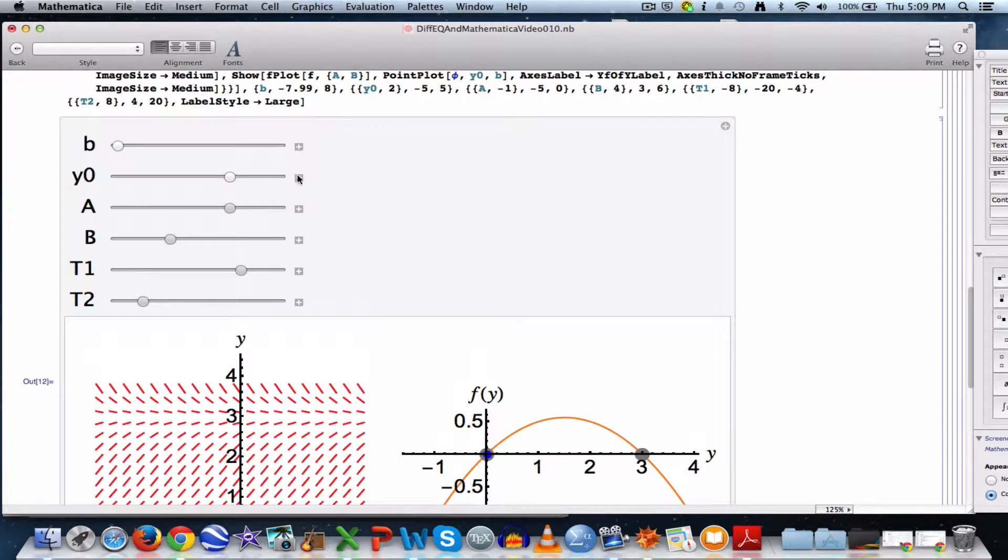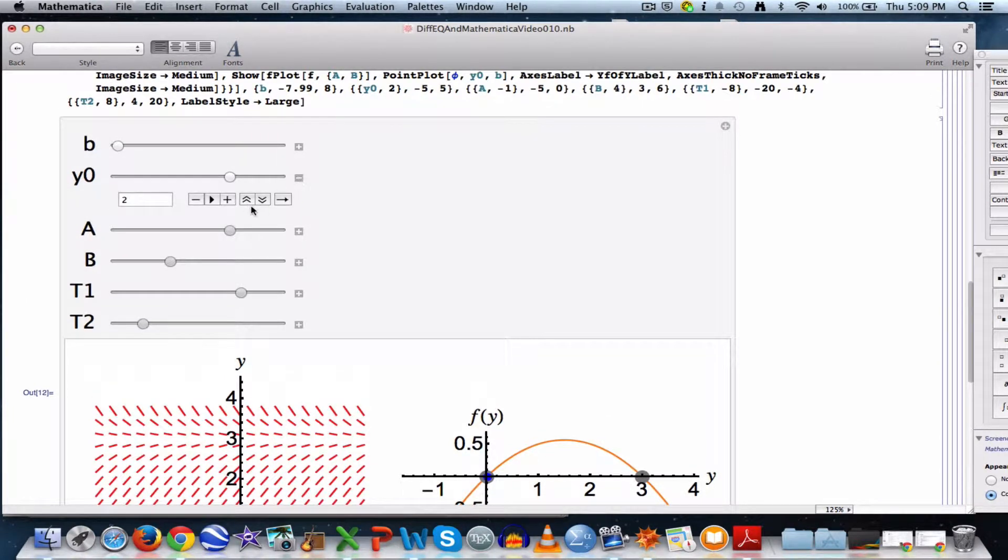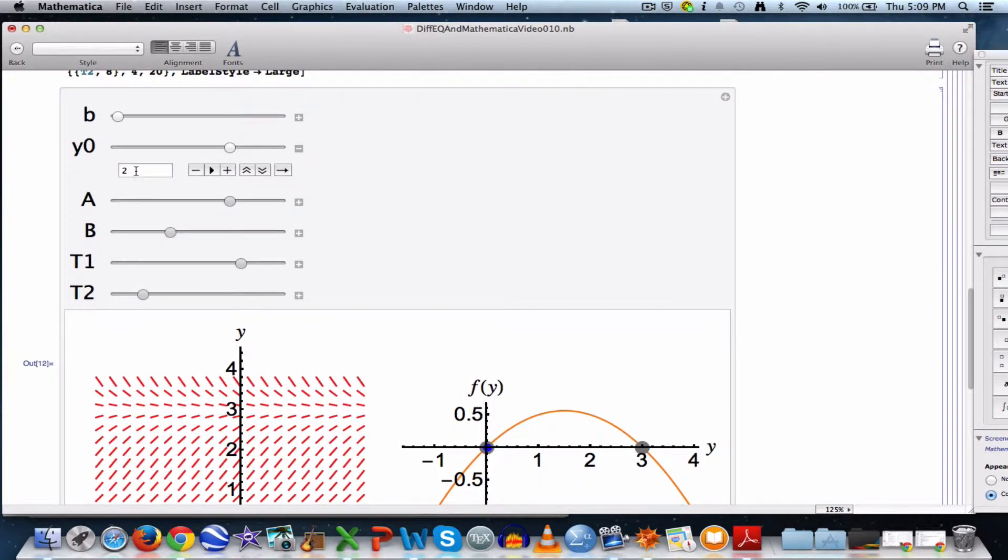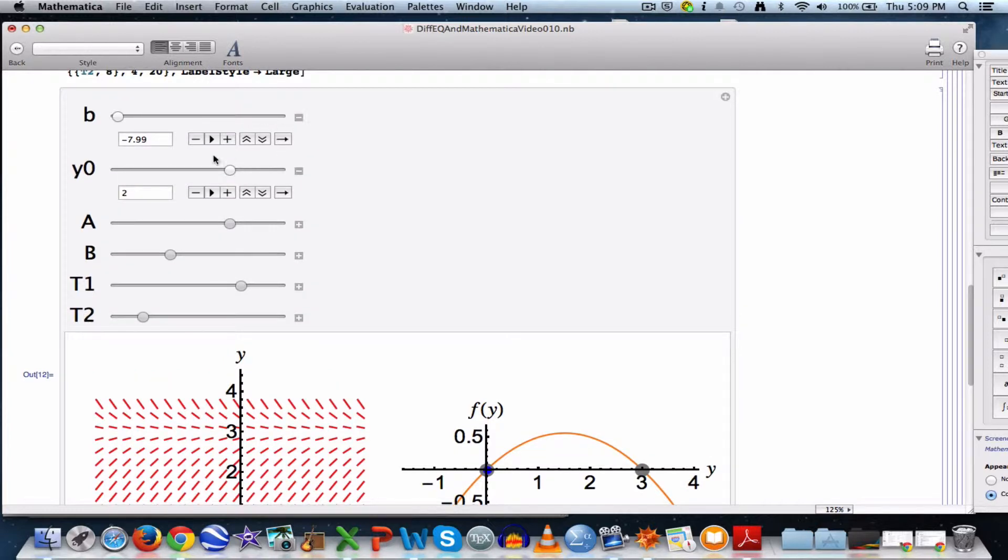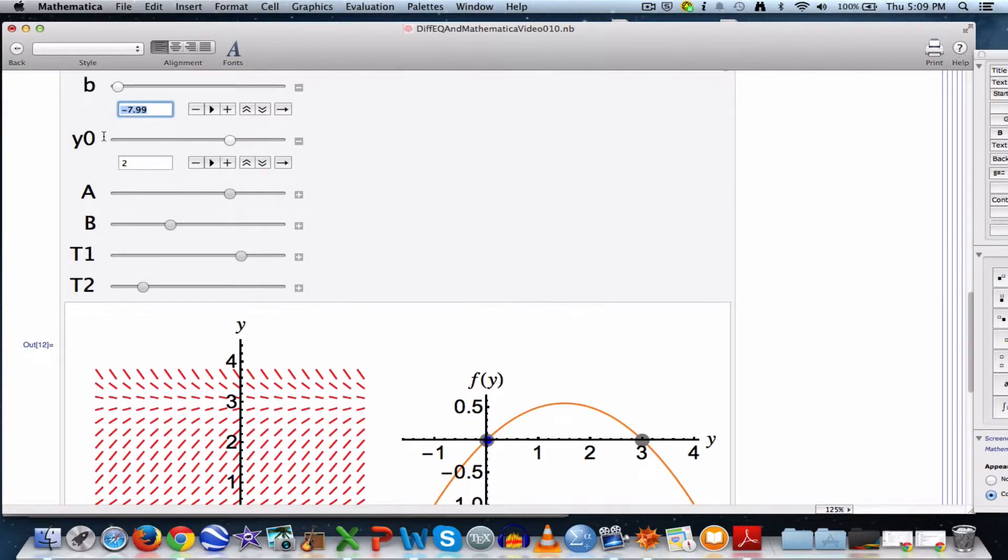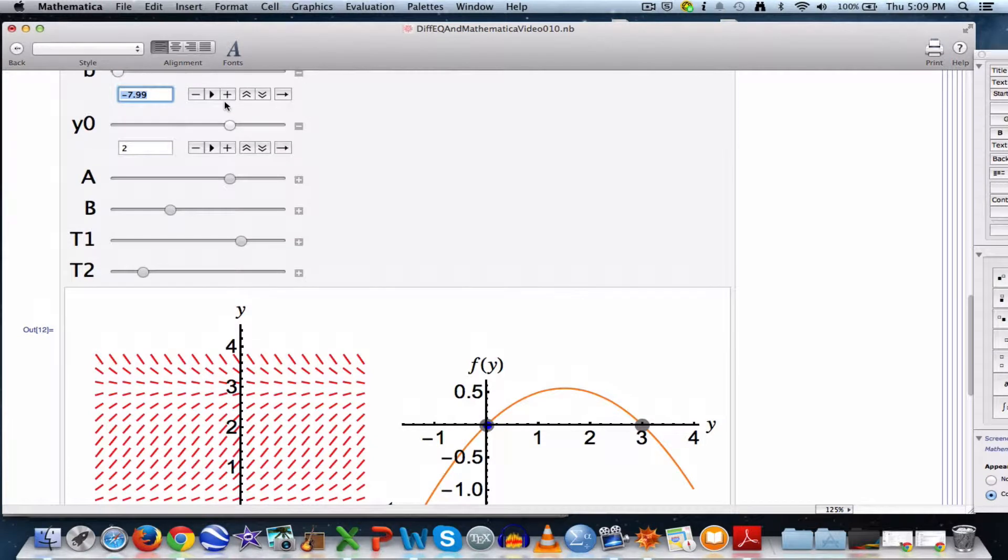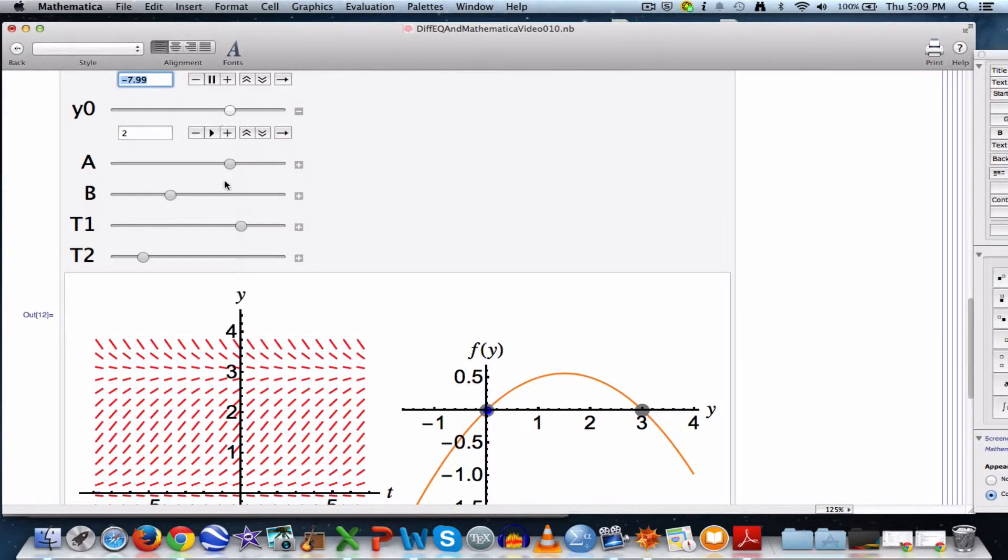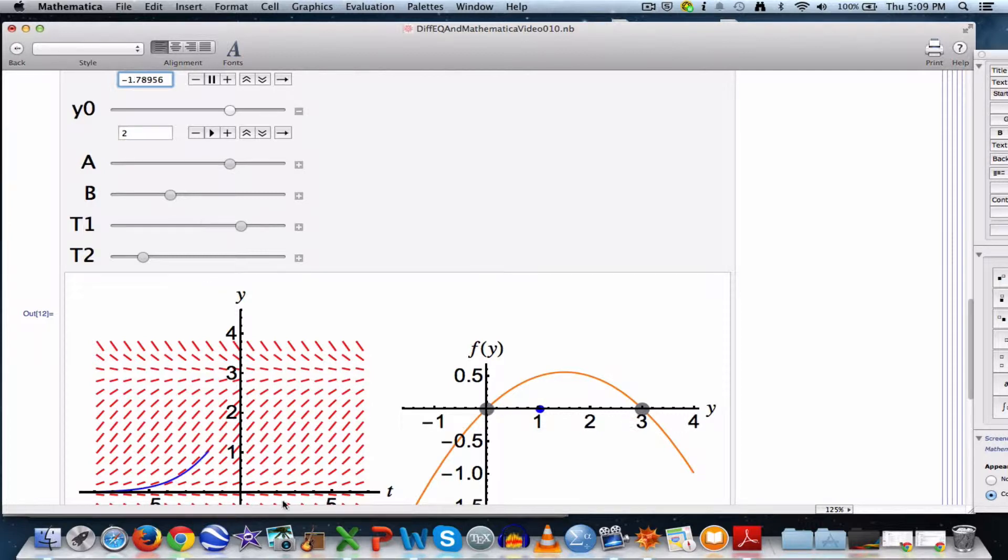More importantly are y0 and little b. y0 is the initial value of y. That's initially set at 2 here. And little b is the right endpoint of the time interval that starts at negative 8 and goes up to little b. Let's go ahead and play the animation here. Let's let little b increase so you can watch what happens.